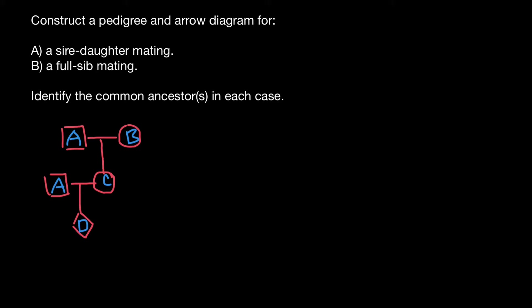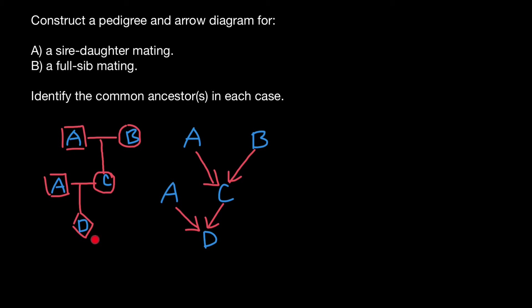And how can we show this pedigree as an arrow diagram? In an arrow diagram, we only show the contribution of the gene. So person A, person B, and individual C — because we are talking about animals here. A contributes half of its genome to C. Now again we see individual A, and individual A and C each contribute half of the genome to individual D. This is the same as what we see in the pedigree, but this is the arrow diagram representation.